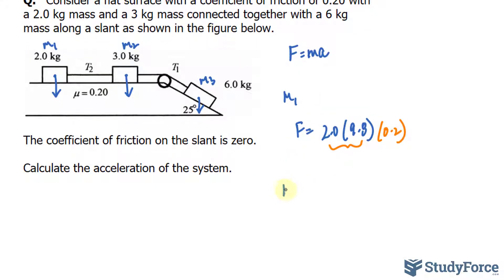And I'll do the same thing for mass two. So mass two is force is equal to 3 kilograms times the acceleration due to gravity. And again, mu is 0.2. Luckily for us, and it's one less thing that we have to worry about, is that there is no coefficient of friction on this mass. So for mass three, the force due to gravity is 6 times 9.8.